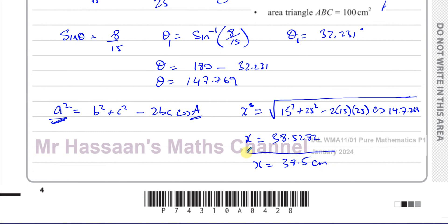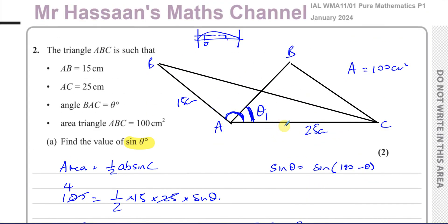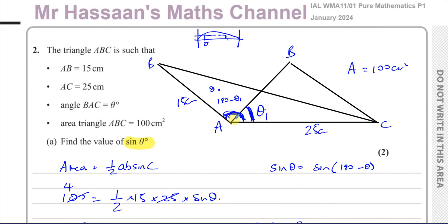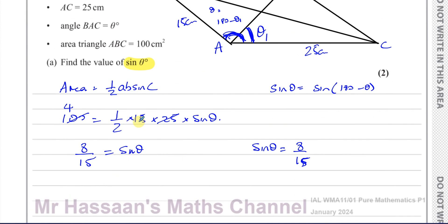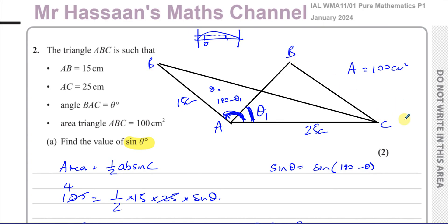That concludes question number two. The key point is that there are two cases — theta and 180° − theta both share the same sine ratio. Because BAC is greater than 90°, we use the obtuse angle. Had we used the acute angle, BC would not have been the same length. That concludes question number two from the January 2024 Pure Mathematics P1 paper.